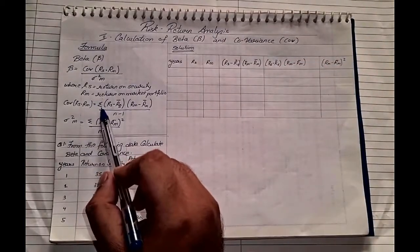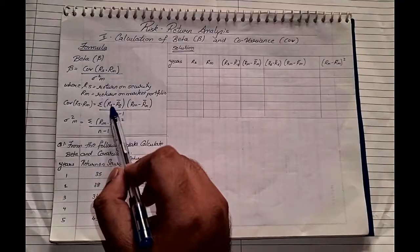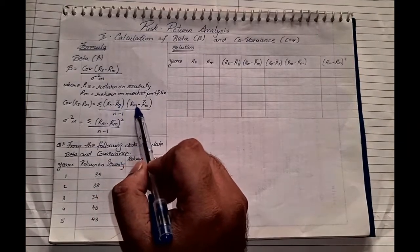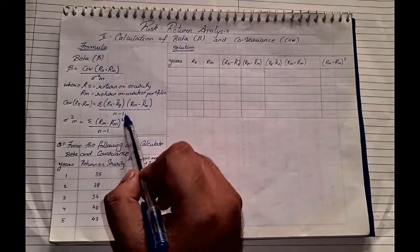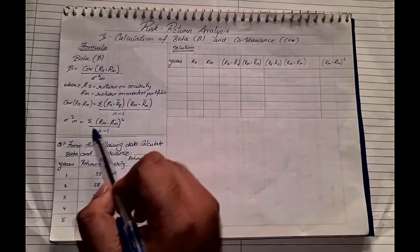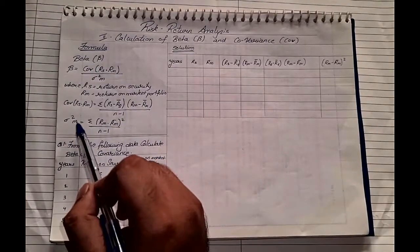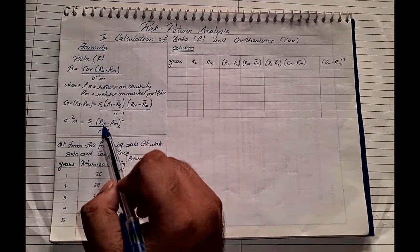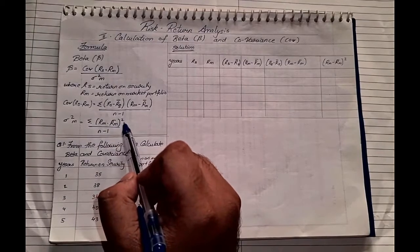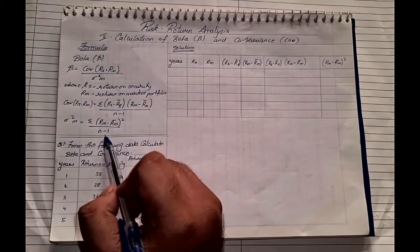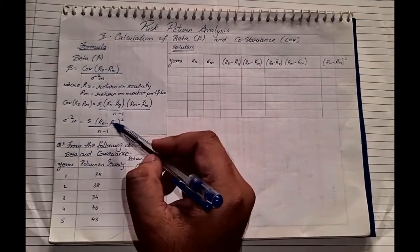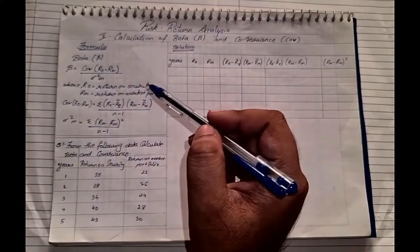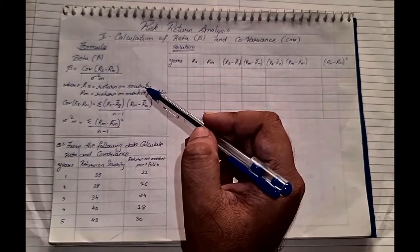The covariance formula is: sigma of (rs minus r̄s) into (rm minus r̄m) upon n minus 1. And the standard deviation squared of the market formula is: summation of (rm minus r̄m) squared upon n minus 1. Now looking at the formulas they look a little complicated, but while actually solving it is very simple.